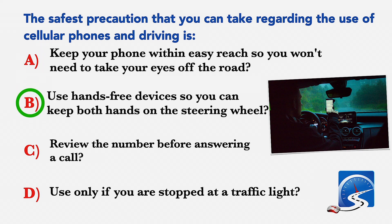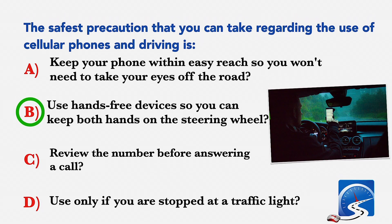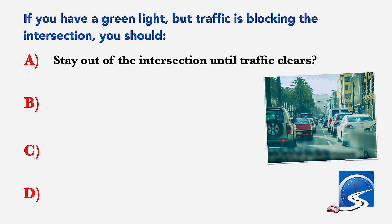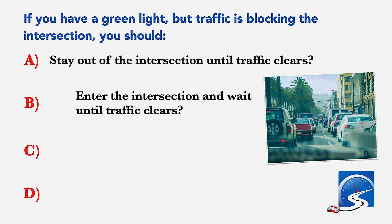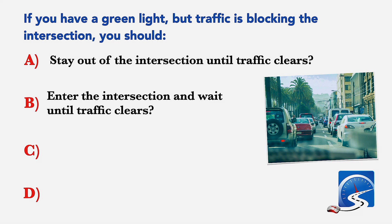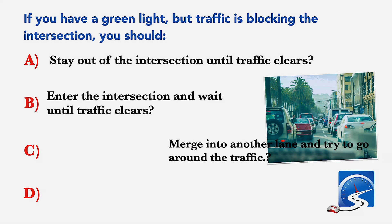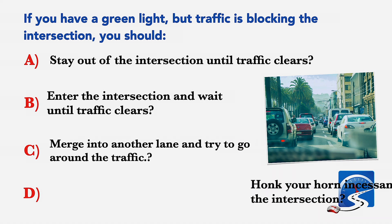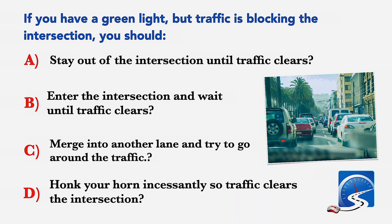If you have a green light but traffic is blocking the intersection, you should: A: Stay out of the intersection until traffic clears. B: Enter the intersection and wait until traffic clears. C: Merge into another lane and try to go around the traffic. D: Honk your horn incessantly so traffic clears the intersection. Correct answer A: Stay out of the intersection until traffic clears.